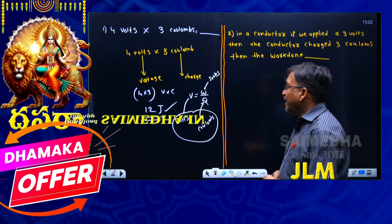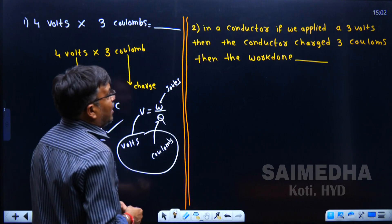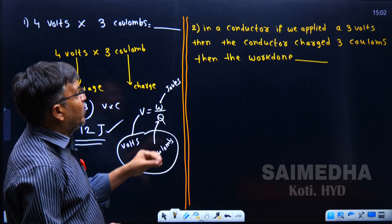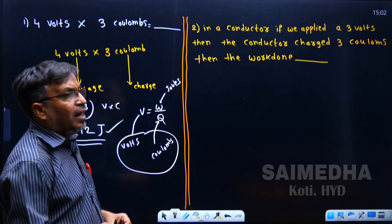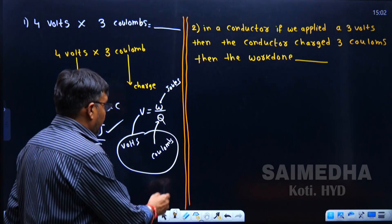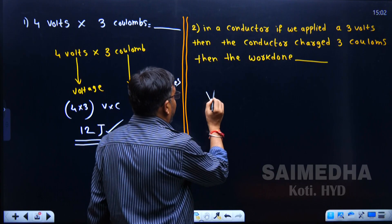Next, second question. In a conductor, if we applied 3 volts, then the conductor charged 3 coulombs. Then the work done?